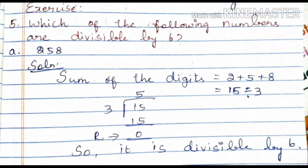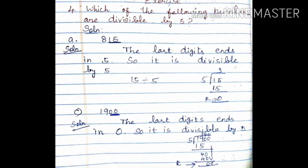Check: 815 divided by 5. 3 fives are 15, 15 minus 15, remainder is 0. So 815 is divisible by 5. For the next number, the last digit ends in 0, so it is also divisible by 5.